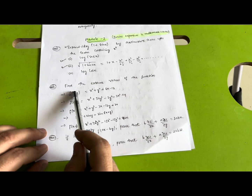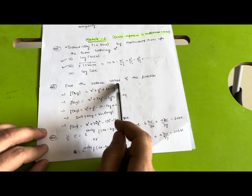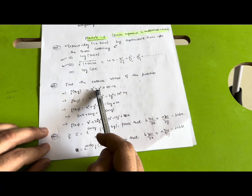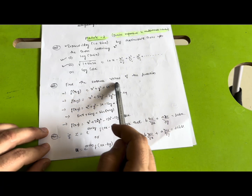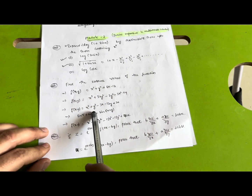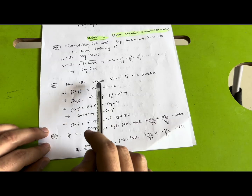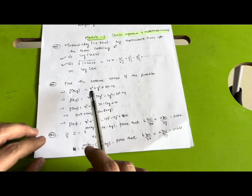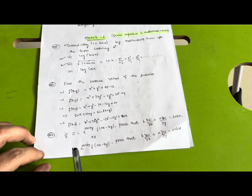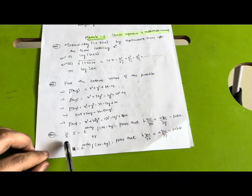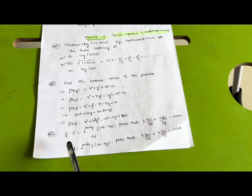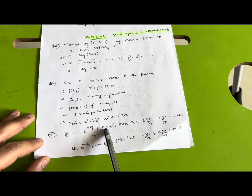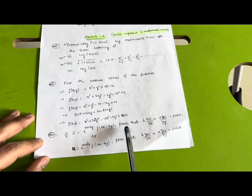Coming to finding the extreme values of the function: f(x, y) = x² + y² + 6x − 12, and similar equations — pause the video to note them down. Next, a super important question: if z = e^(ax+by) · f(ax − by), show that b·(∂z/∂x) + a·(∂z/∂y) = 2abz. They may also ask it with u instead of z: if u = e^(ax+by) · f(ax − by), show that b·(∂u/∂x) + a·(∂u/∂y) = 2abu.